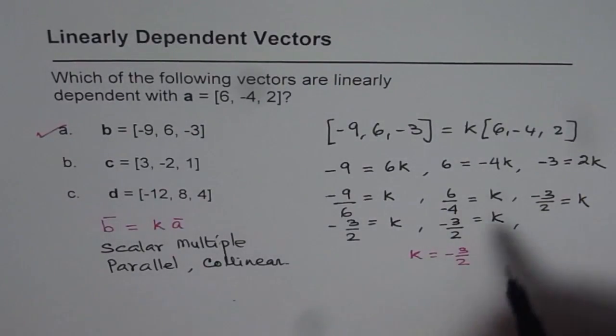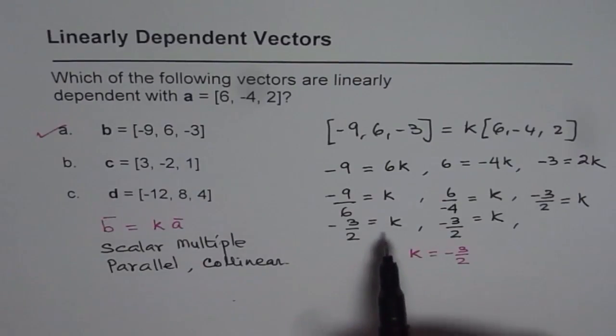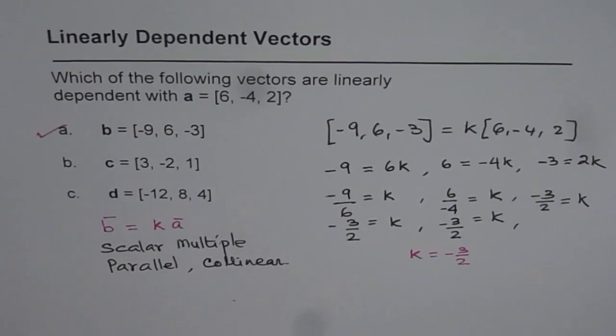Now follow the same method and check whether the vectors C and D are linearly dependent or not, correct? Remember, you should get K values same in all the three cases. That is how it should be proved. Thank you and all the best.